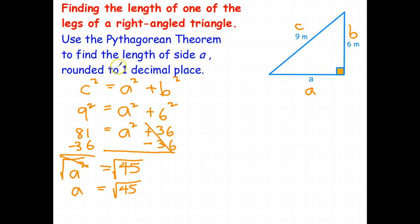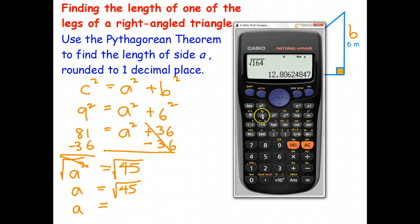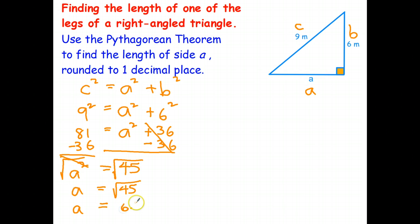And round it again to one decimal place. Let's go get our calculator. And 6.70. So that rounds to 6.7 meters, round it off to one decimal place.